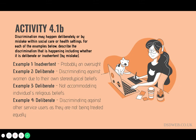Example four: a home care worker stays longer at an individual's home than they should because they are fond of them, meaning the next person has less time for their care and support. Again, this is deliberate discrimination. The worker is discriminating against their next client by not keeping to their schedule due to personal preferences, resulting in not treating all clients fairly and equally.